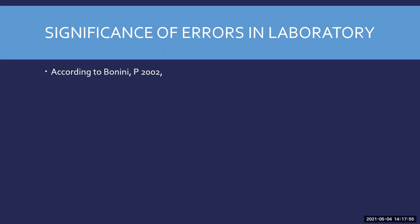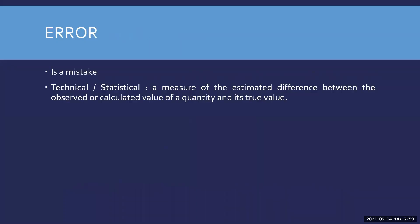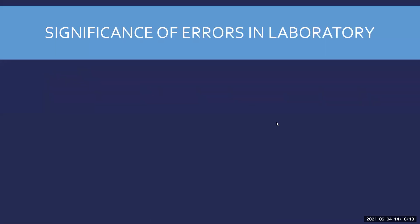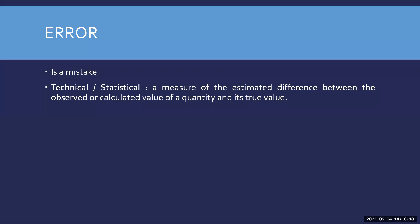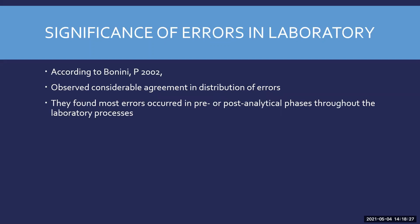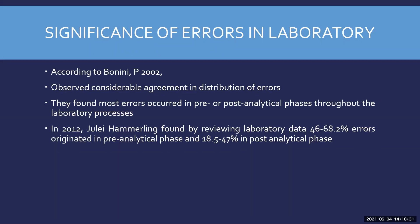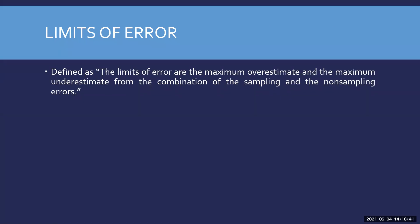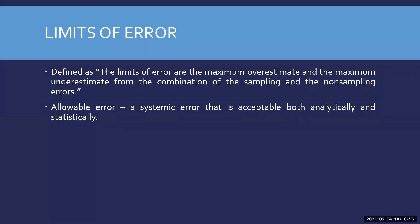Let us have a quick recap. Error is defined as a measure of estimated difference between the observed or calculated value of a quantity and its true value. It is a quantitative indicator of accuracy — it gives a number to accuracy. Errors happen mostly in pre-analytical and post-analytical phases, which has a direct impact on accuracy of the analysis. Limits of error are the maximum overestimate and the maximum underestimate from the combination of sampling and non-sampling errors.